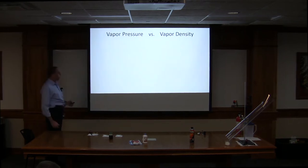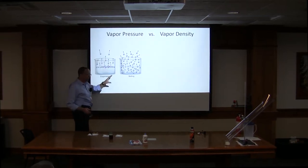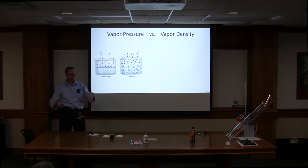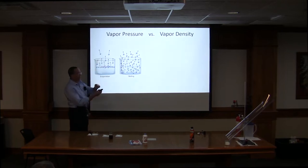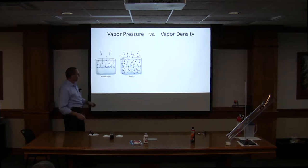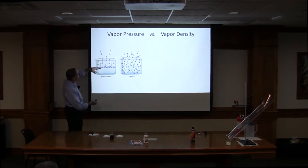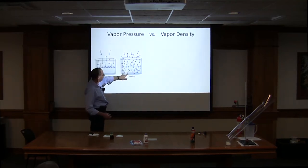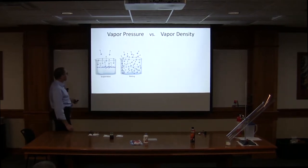Let's talk about vapor pressure and vapor density. Vapor pressure is basically evaporation — when a liquid has a fairly high vapor pressure, molecules of acetone, gasoline, benzene, whatever, have enough energy to escape off into the air. Evaporation happens above the liquid surface, whereas boiling occurs when enough energy creates gas bubbles below the liquid level. That's the key difference between boiling and evaporation.